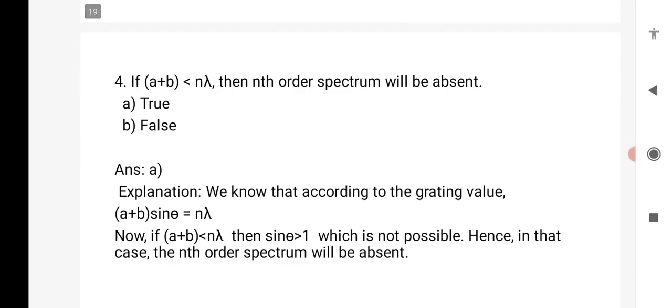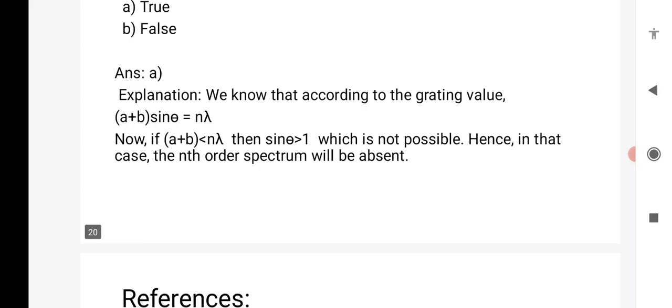Fourth, if A plus B less than n lambda, then nth order spectrum will be absent. Is this true or false? The answer is true. Explanation: We know that according to the grating value, A plus B sin theta equals n lambda. Now, if A plus B is less than n lambda, then sin theta is greater than 1, which is not possible. Hence, in that case, the nth order spectrum will be absent.